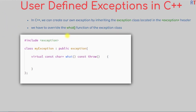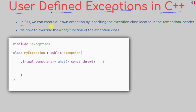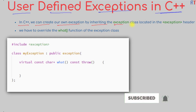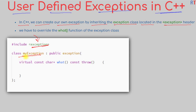In this video we're going to talk about user-defined exceptions in C++ programming. In C++ we can create our own exception by inheriting the exception class located in the exception header. First of all we have to include the exception header in our program, and then we can create our own user-defined exception class, which must inherit the parent exception class located inside the exception header.